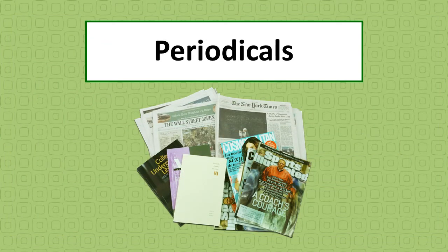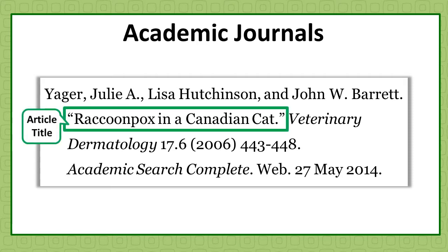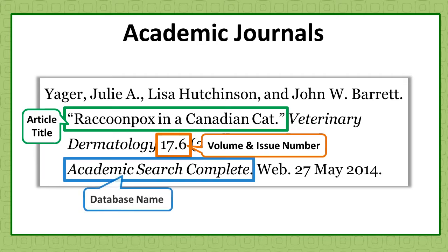Periodicals include works that are published in regular intervals like academic journals, magazines, or newspapers. Academic journals will typically contain an article title followed by the name of the original source. Nearly all academic journals will have a volume and issue number. Many academic journals are retrieved from scholarly article databases; however, some academic journals that are published exclusively online may have a web address.